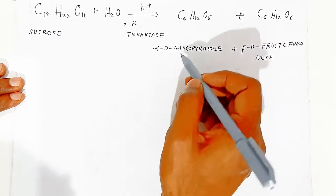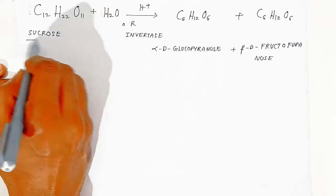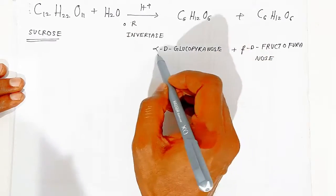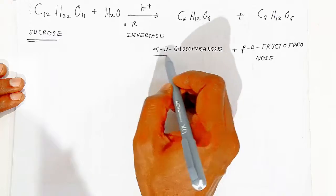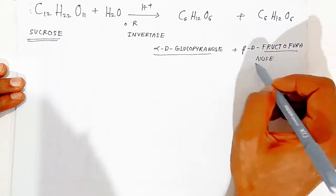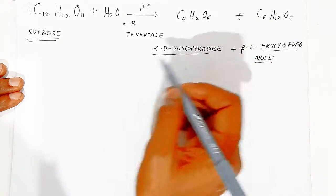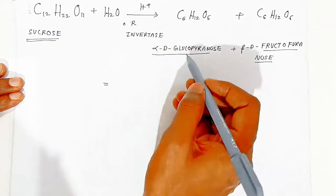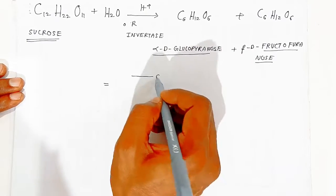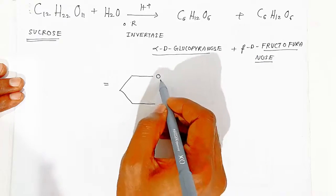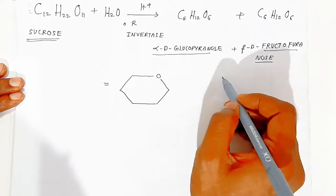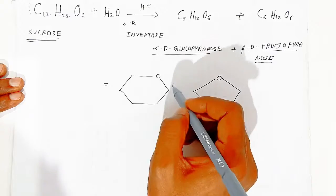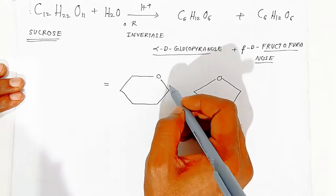To draw the structure of sucrose, you need to know the structures of alpha-D-glucopyranose and beta-D-fructofuranose. For alpha-D-glucopyranose, first draw the pyranose ring. For beta-D-fructofuranose, draw the furan ring.